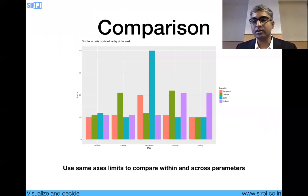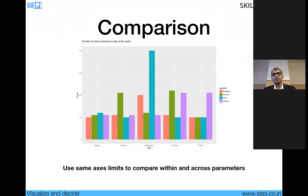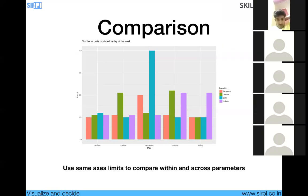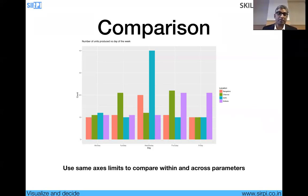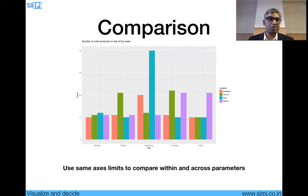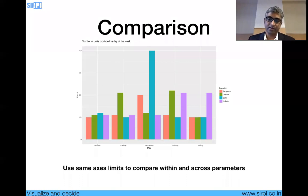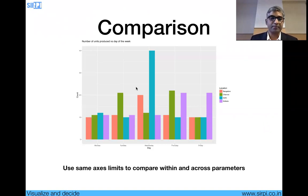This is called outlier-based learning. Only when we visualize will we be able to get inspiration based on outliers, and then make changes in other areas — for instance, improve production in other locations and days up to the same number Delhi achieved on Wednesday. Or it could be a bad outlier — maybe somebody was doing something they're not supposed to, and that data point has to be removed. This is possible only when you create a chart and understand what's going on in the raw data.